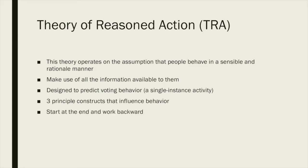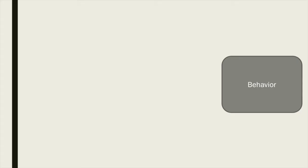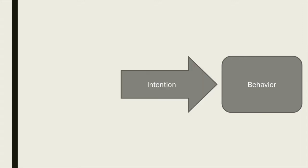It's easiest to understand this theory starting at the end and working backward. The end point of this theory is a person's overt behavior — what you actually do. In the case of voting, it would be whether or not you vote. The most important determining factor to whether or not we will conduct a behavior is our intention. The greater our intention to perform a behavior, the greater the likelihood of actually performing the behavior.